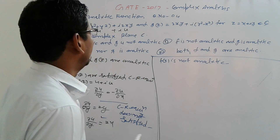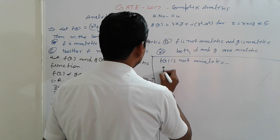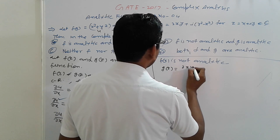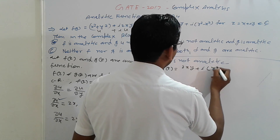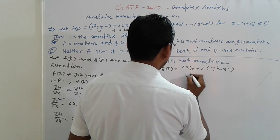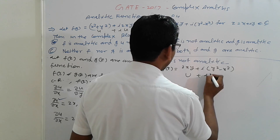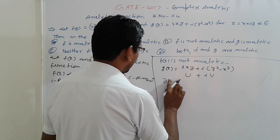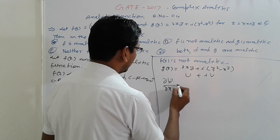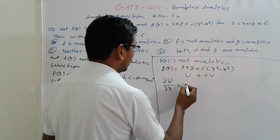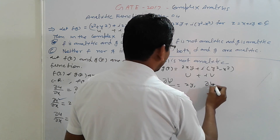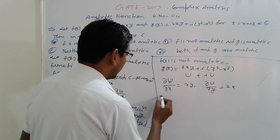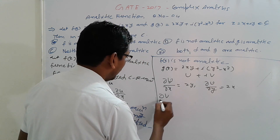Now come to g(z). Suppose g(z) = 2xy + i(y² − x²). This is u + iv. So del u / del x = 2y, del u / del y = 2x, and del v / del x = −2x.